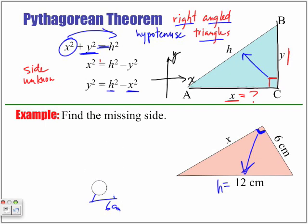So let's solve the following. So we always start off with our original equation, which is x squared plus y squared equals h squared. So we have x squared plus y squared is equal to h squared. So in the place of these letters, instead of x, well, x stays because that's the unknown. Instead of this y, we've put in 6. Instead of this h, we've put in 12.